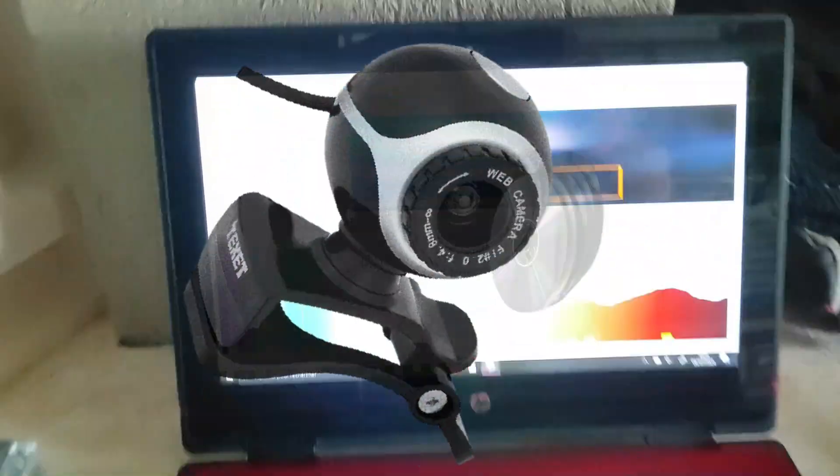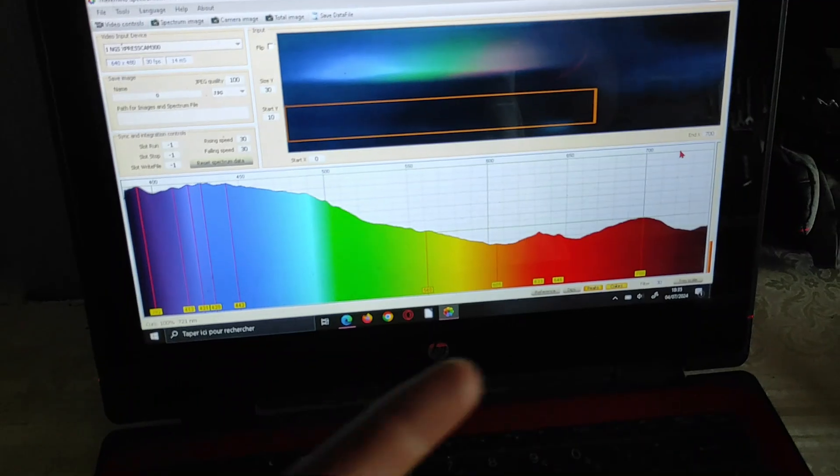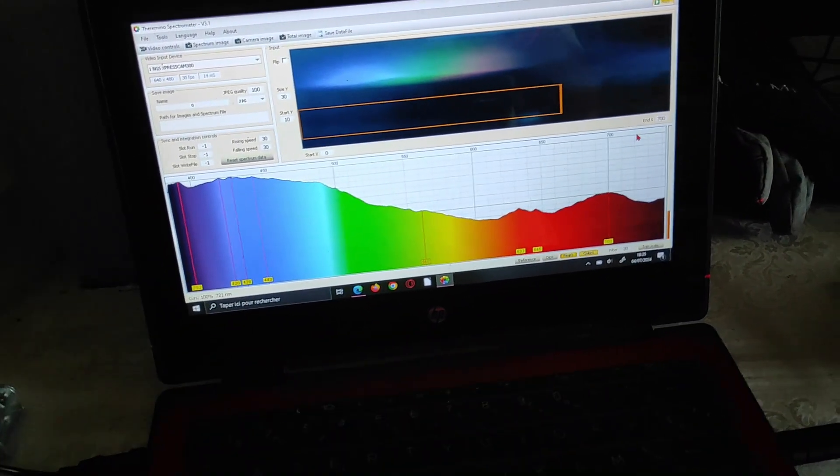Hello guys, today I'll show you how I made this DIY spectrometer from a cheap camera and a DVD. Surprisingly, it's good enough to analyze light from UV to near infrared and cost me less than 10 euros.